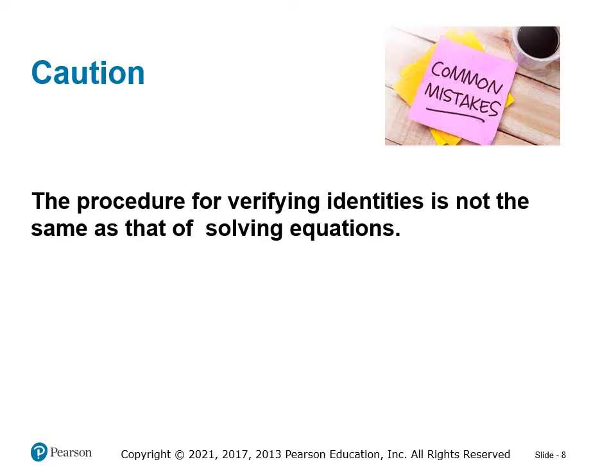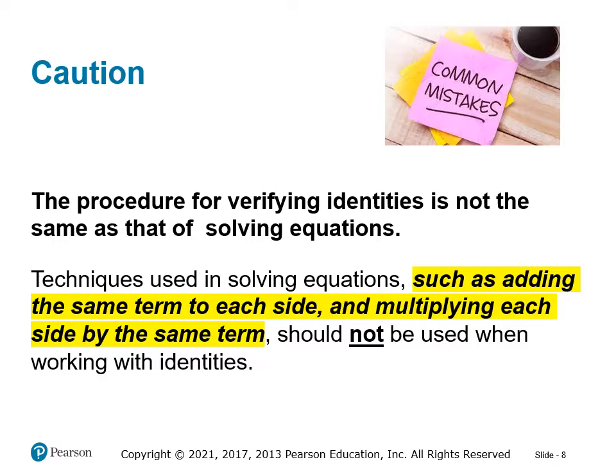Now be careful. A common mistake is that students, so used to algebraic equation-solving, try the same methodology for verifying identities. This doesn't work because you're not solving the equation — you're trying to make one side look like the other. You cannot add the same term to each side, and you cannot multiply each side by the same term. These operations should not be used when working with identities.